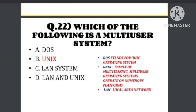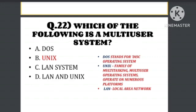Question number 22: Which of the following is a multi-user system? The options are DOS, Unix, LAN system. The answer is Unix. Unix is a multi-user system. You can do multitasking with it. DOS stands for Disk Operating System. Unix is a family of multitasking and multi-user operating systems.